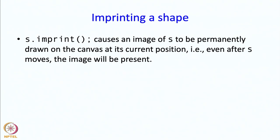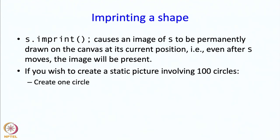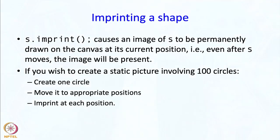One useful operation is to imprint a shape. S.imprint will cause an image of S to be permanently drawn on the canvas at its current position. Even after S moves, the image will be present. If you wish to create a static picture involving 100 circles or other objects, it's better to create one circle, move it to appropriate positions, and imprint the circle in those positions rather than create 100 circles.